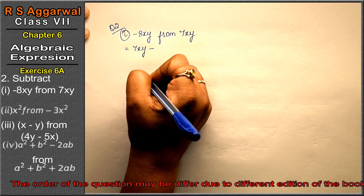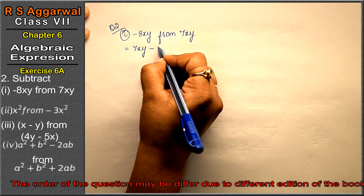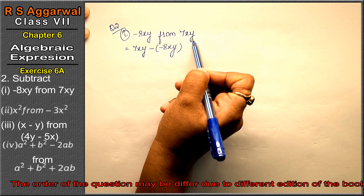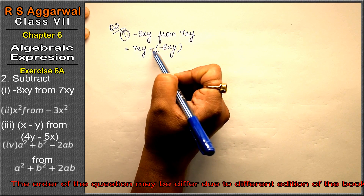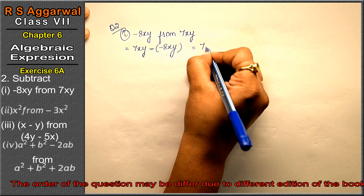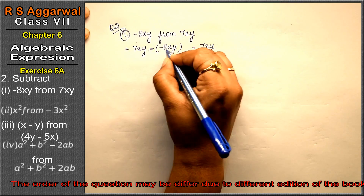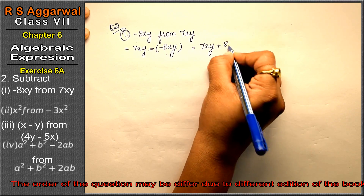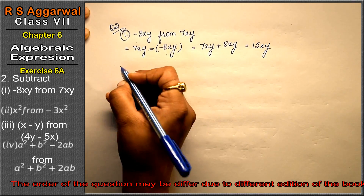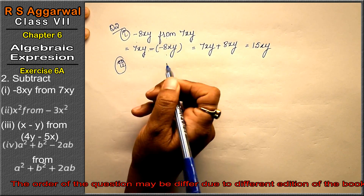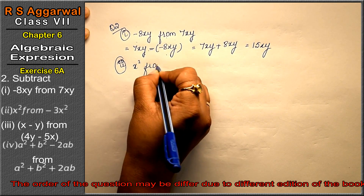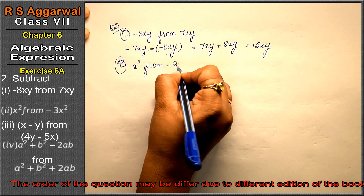Because we are subtracting, the digit after 'from' comes first, then the subtract sign is applied, then the digit before 'from' comes. So we get 7xy minus minus, which becomes plus 8xy, that is 15xy is the answer.